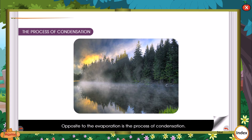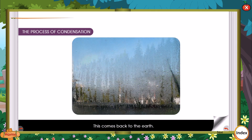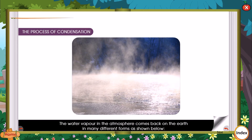The process of condensation is opposite to the process of evaporation. What happens to the water vapour which goes into the air? It comes back to the earth. This is called condensation of water. The water vapour in the atmosphere comes back to the earth in many different forms.